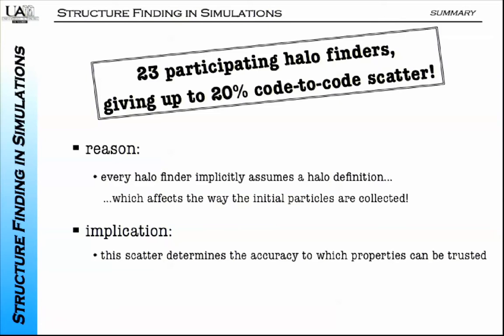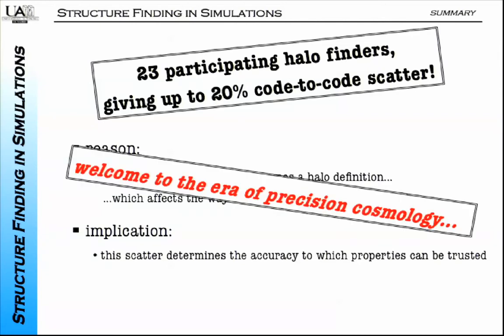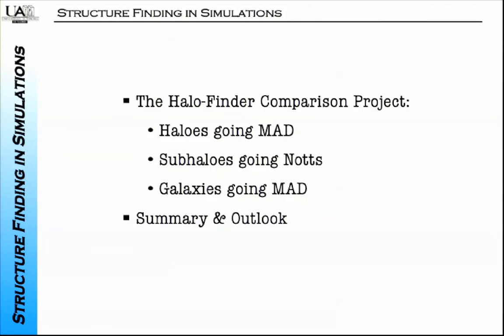The bottom line is: this 20% number determines the accuracy to which we can trust the properties calculated—mass, position, velocity, spin, shape—all of that has an error of approximately 20%. So, welcome to the error of halo properties.